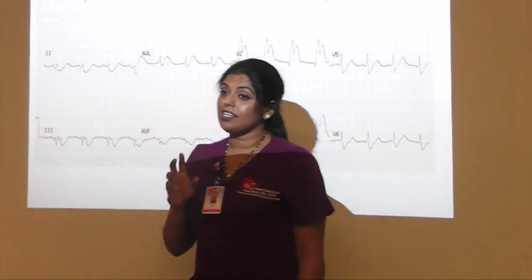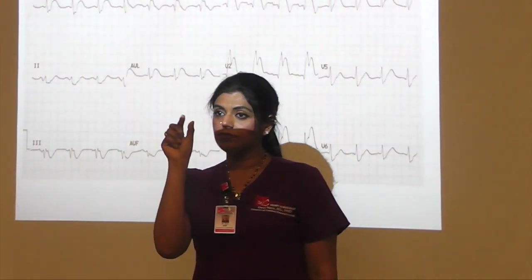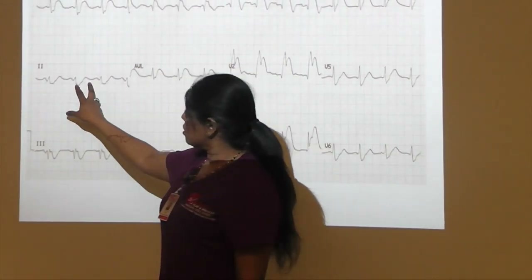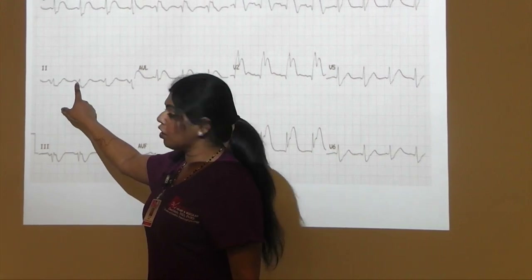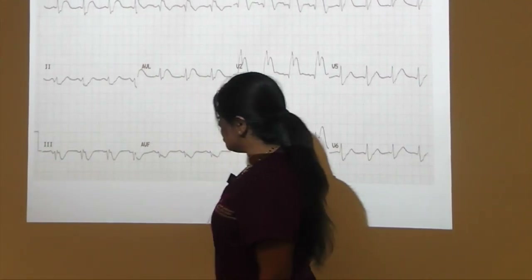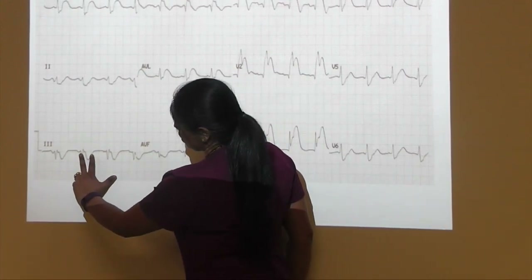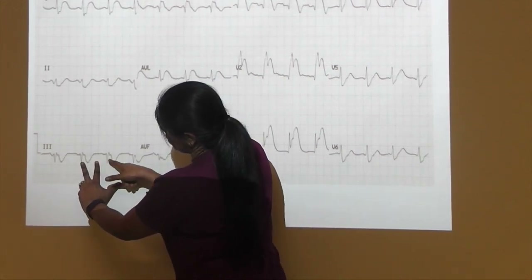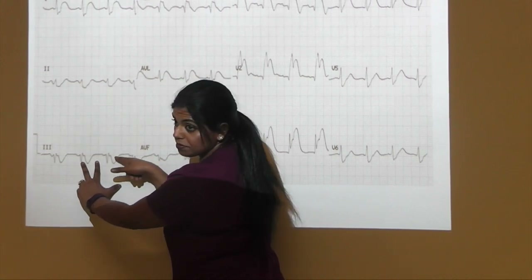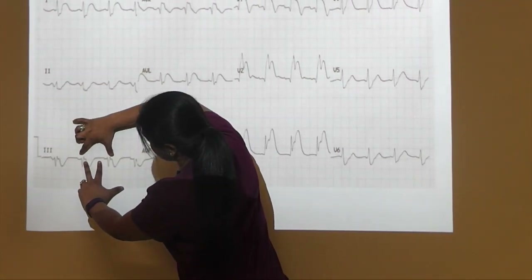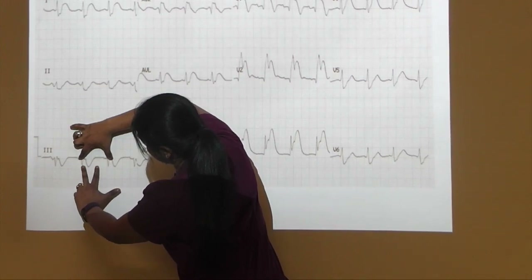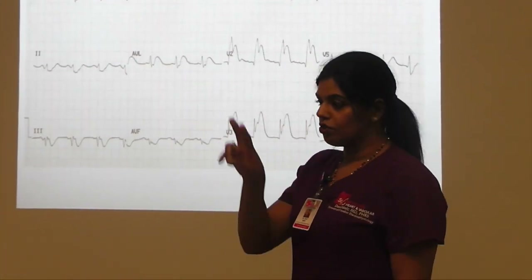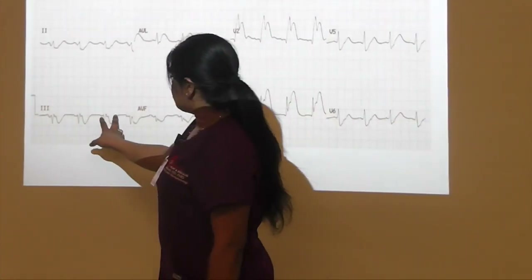Normal QRS is anywhere from 80 to 120 milliseconds — two to three small blocks. The next interval is QT, which is beginning of the Q to the end of the T. The easiest way to see if QT is long is by comparing it to half of the RR interval. If your QT interval is longer than half of the RR interval, then your QT is most likely prolonged.